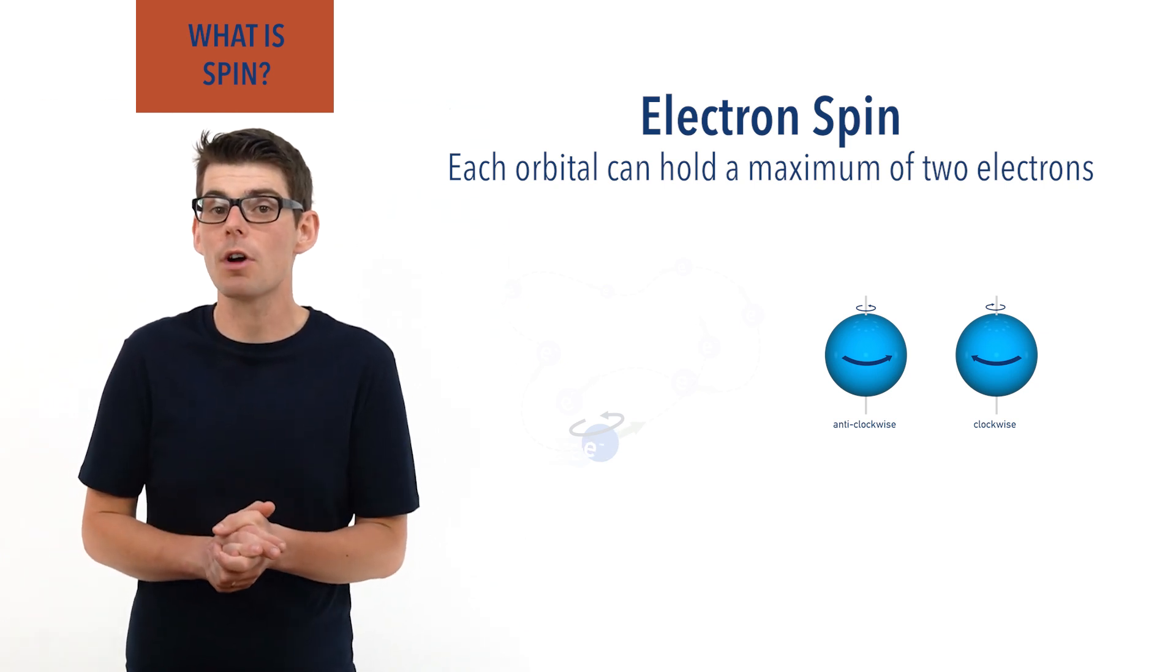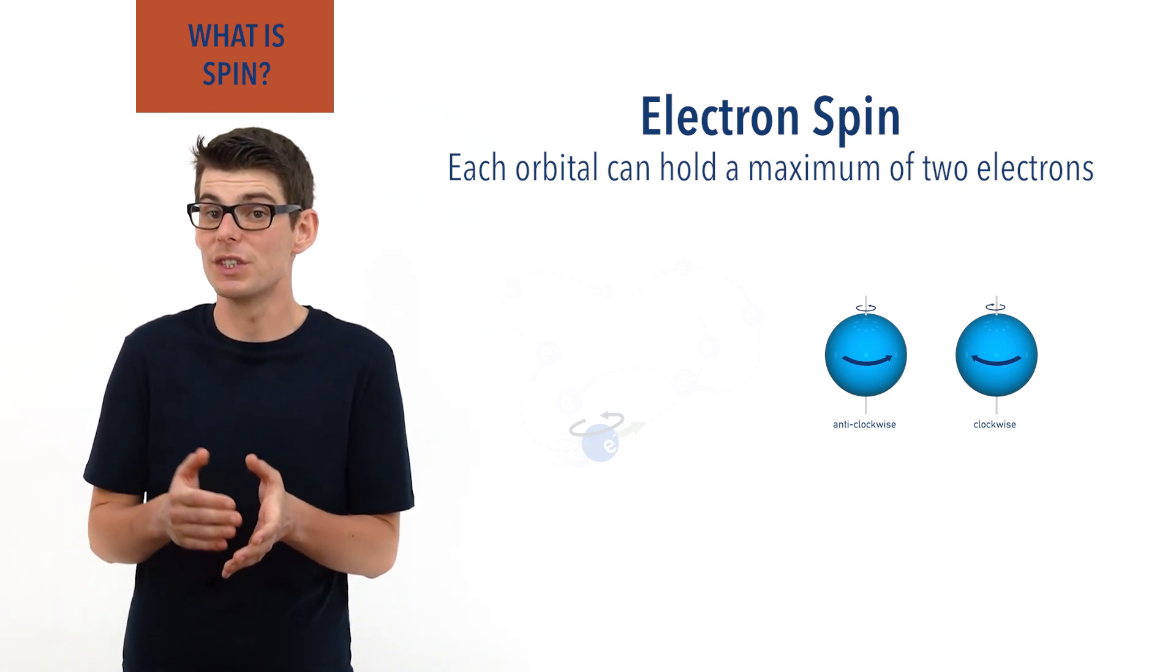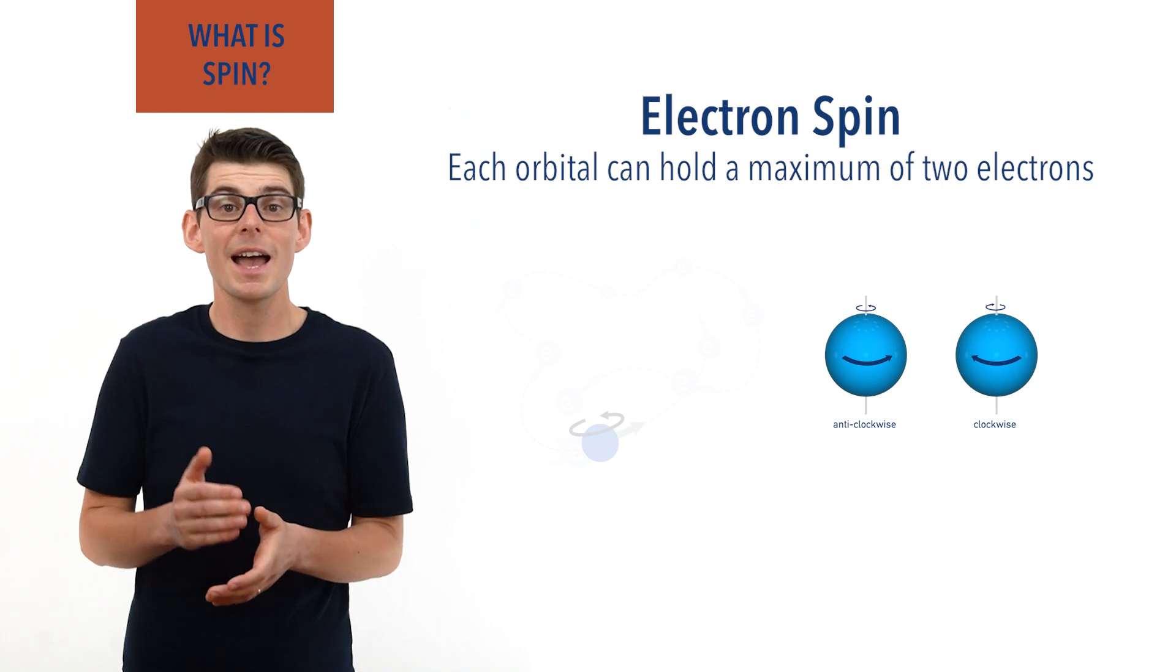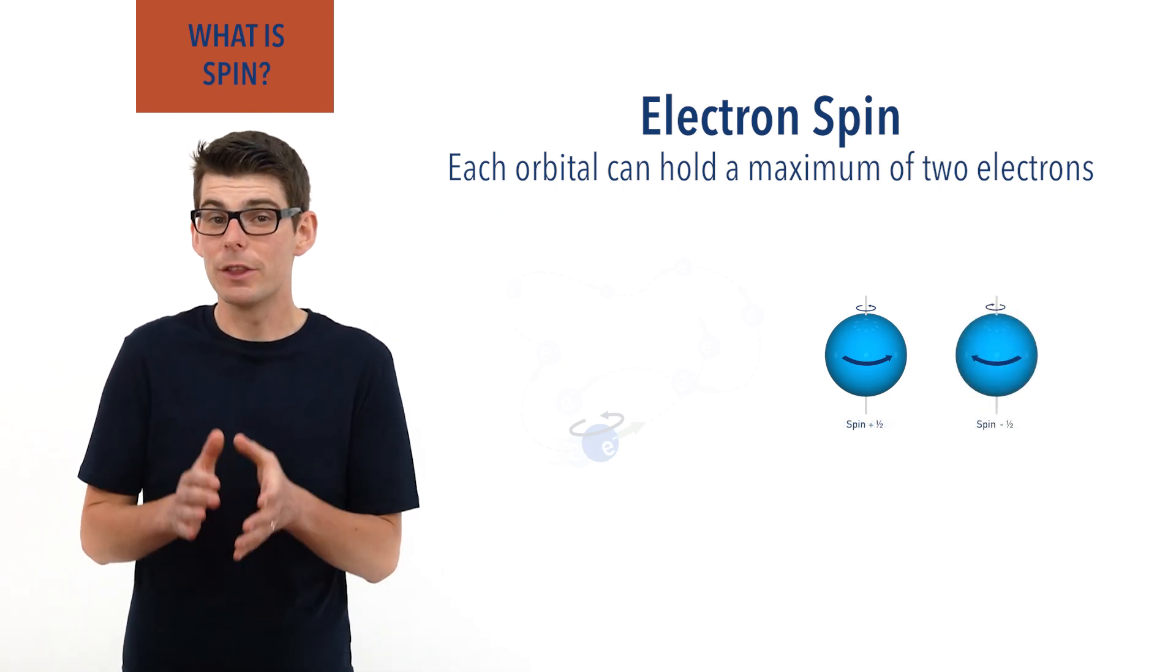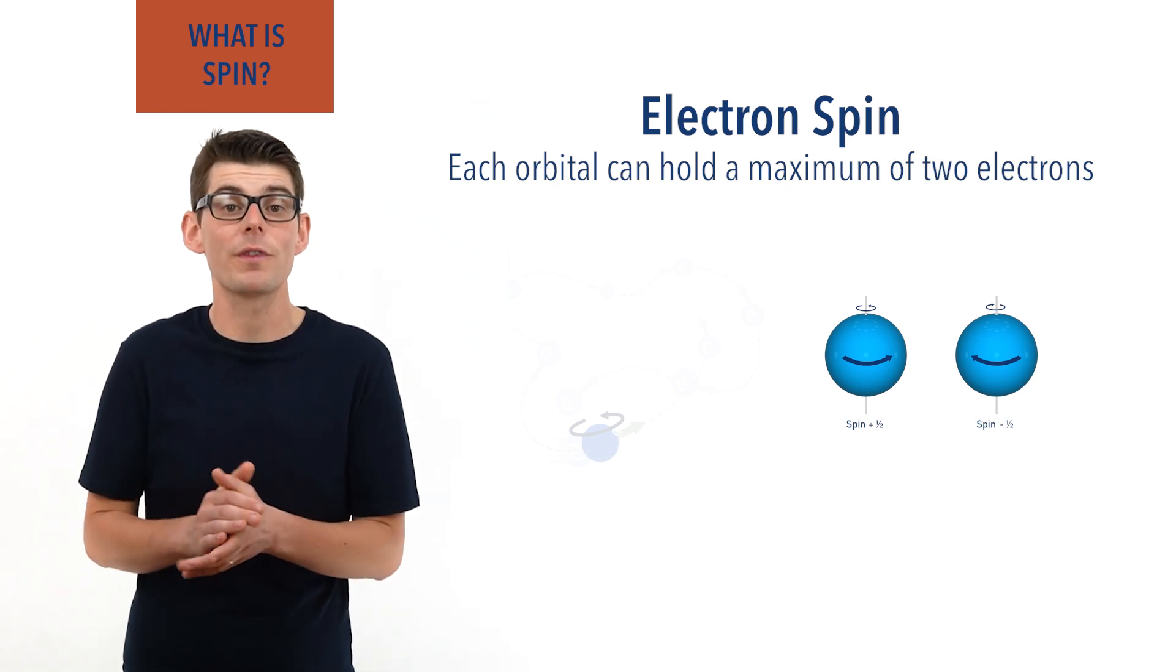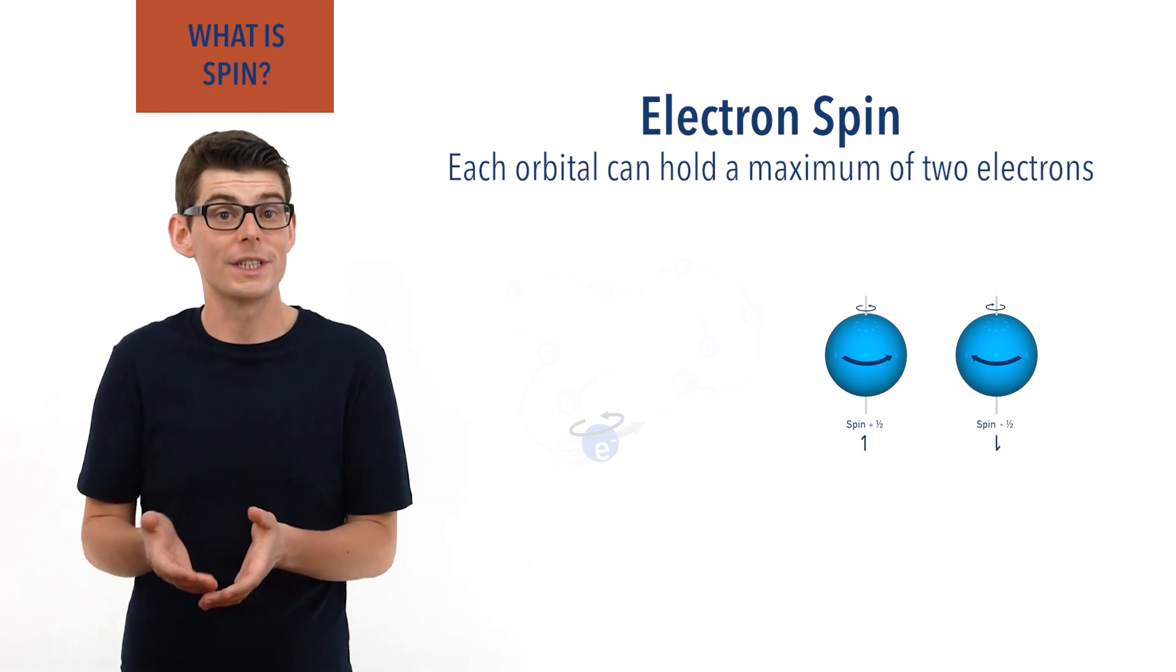Instead we describe the two possible ways electrons can spin as spin up and spin down, written as positive half and negative half, and shown on diagrams as a half arrow pointing up or down.